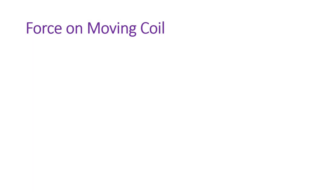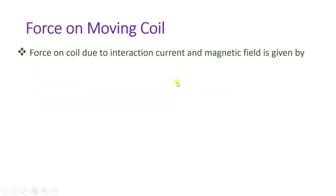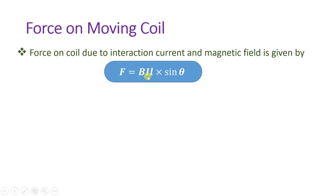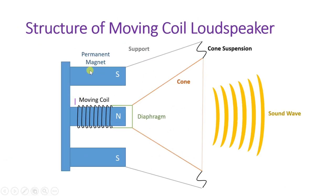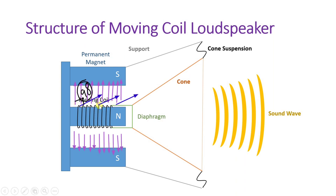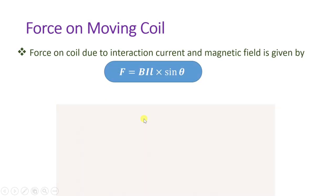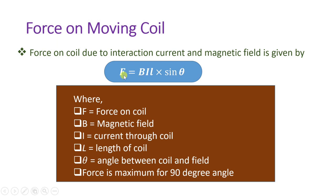The force acting on the moving coil due to the constant magnetic field is calculated as F = BIL sinθ, where B is the constant magnetic field, I is the current passing through the moving coil, L is the length of the moving coil, and θ is the angle between the coil and the magnetic field. Since the coil direction is perpendicular to the magnetic field, θ = 90°, and sin 90° = 1, so the force simplifies to F = BIL.